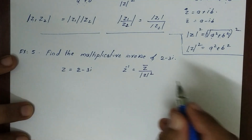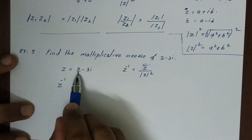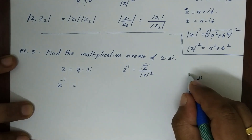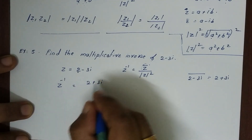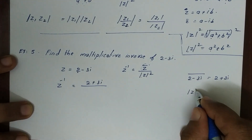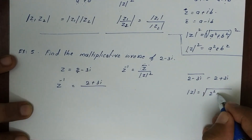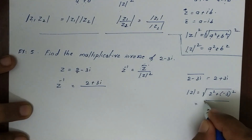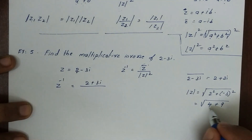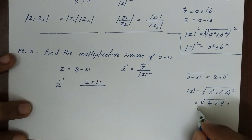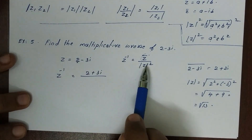So z-bar, the conjugate of 2-3i, is equal to 2+3i. Then modulus of z is the square root of 2² plus (-3)², which is root of 4 plus 9. That gives us 9 plus 4 equal to 13, so modulus of z is equal to root of 13.